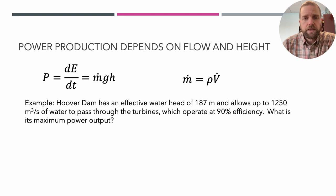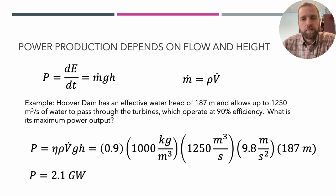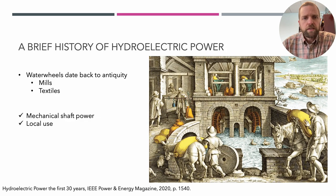The power equation is: P = η·ρ·V̇·g·h, where η is efficiency, ρ is density, V̇ is volume flow rate, g is acceleration due to gravity, and h is head. Using the given values — with g and ρ looked up — this computes to 2.1 gigawatts, which is the peak power production for Hoover Dam.